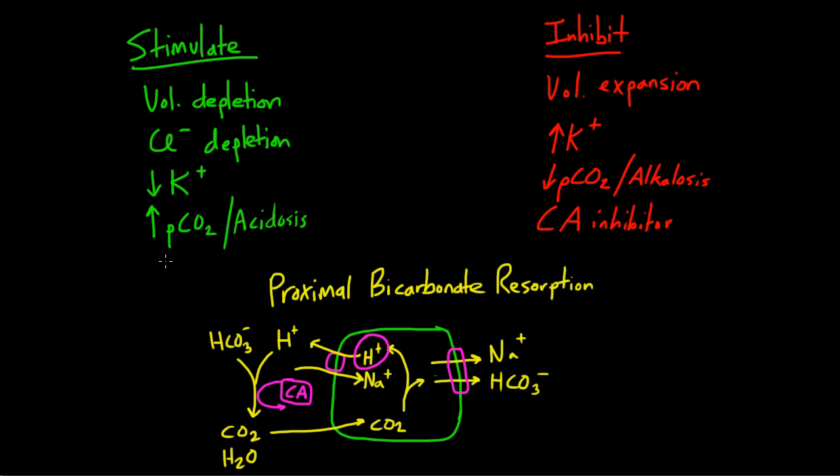Also, elevated PCO2 and metabolic acidosis will promote proximal bicarbonate reabsorption. And this should make total sense, right? Because we want to reabsorb bicarbonate in the setting of an acidosis. And you can imagine if you had more CO2 available, this dissolving through membranes and inside cells, now it can participate as an ingredient in this cycle that will lead to the reabsorption of bicarbonate.